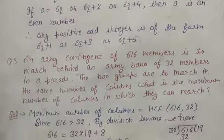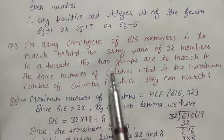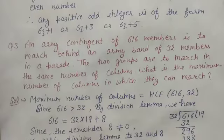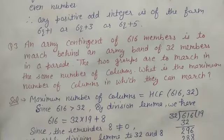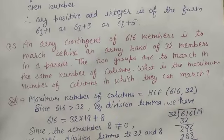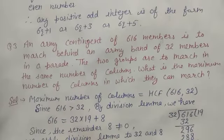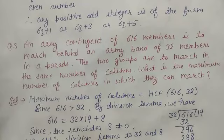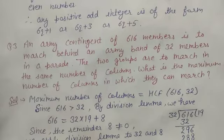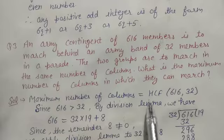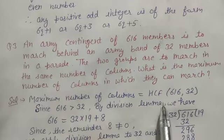Next, question 3: an army contingent of 616 members is to march behind an army band of 32 members in a parade. The two groups are to march in the same number of columns. What is the maximum number of columns in which they can march? We need to find the maximum number of columns, which equals HCF of 616 and 32.